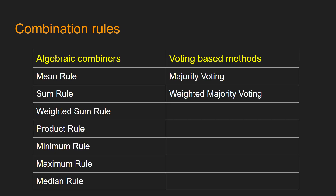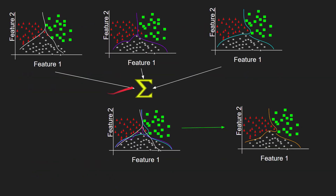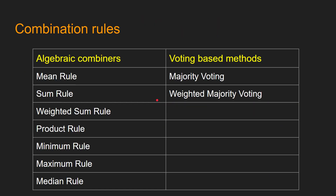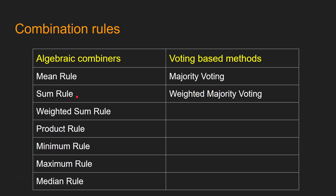There are many combination rules available for ensemble. Broadly, there are algebraic combiners and voting-based methods. Algebraic combiners include the mean rule, sum rule, weighted sum rule, product rule, minimum rule, maximum rule, and median rule. The aggregation method changes based on the algorithm used. Voting methods include majority voting and weighted majority voting, which we will cover in detail in future videos.